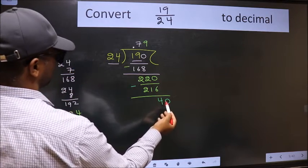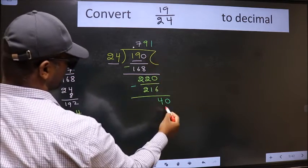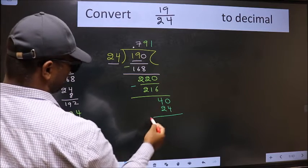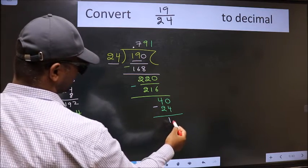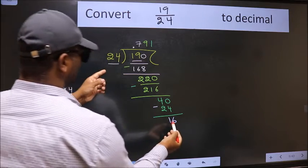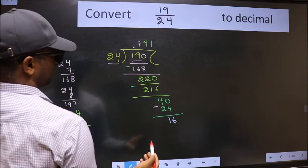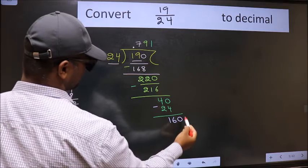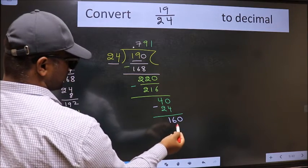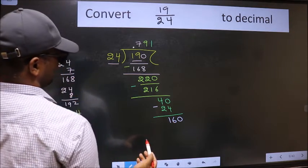A number close to 40 in the 24 table is 24 once, 24. Now we should subtract. We get 16. 16 is smaller than 24, we already have the decimal, so take 0. 160.